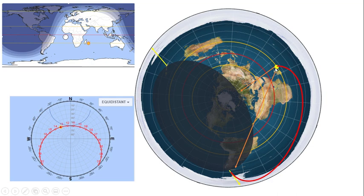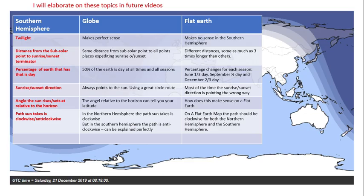You also have to explain why the Sun's rays can only reach as far as the Arctic Circle but somehow also reach all the way to Ushuaia, Argentina. Good luck. If you enjoyed this video, please like and subscribe. I'm planning to make more videos showing how the flat Earth does not work in the southern hemisphere at all.